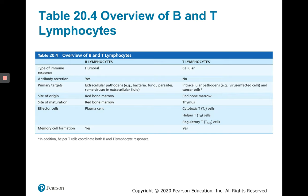Comparing B and T lymphocytes: B lymphocytes are associated with the humoral immune system and turn into plasma cells that secrete antibodies targeting extracellular pathogens. T lymphocytes are associated with the cellular immune system and target intracellular pathogens. Both originate in the red bone marrow. B cells mature in the red bone marrow; T cells mature in the thymus. Effector cells for humoral immunity are plasma cells; for cell-mediated immunity they are cytotoxic T cells, helper T cells, and regulatory T cells. Both B and T lymphocytes can form memory cells when activated.